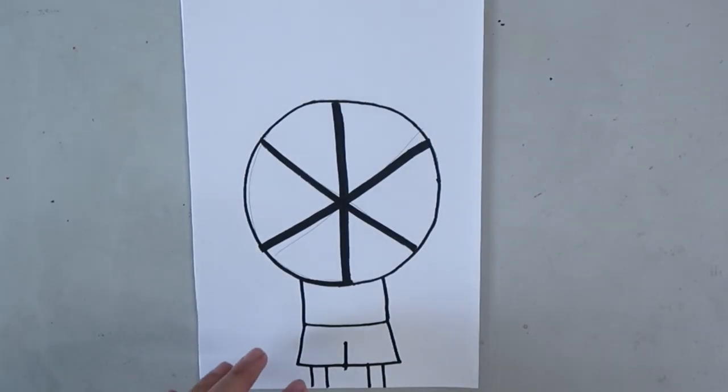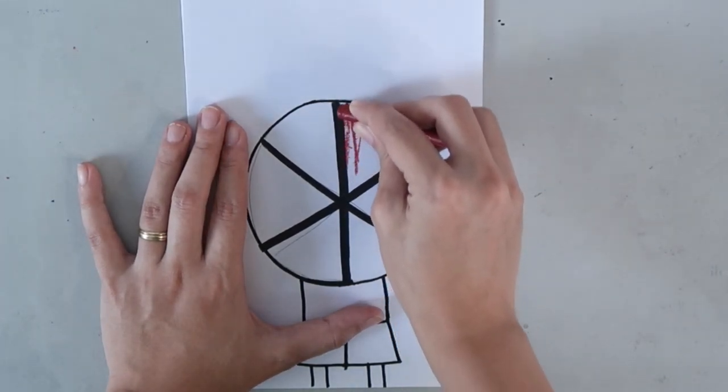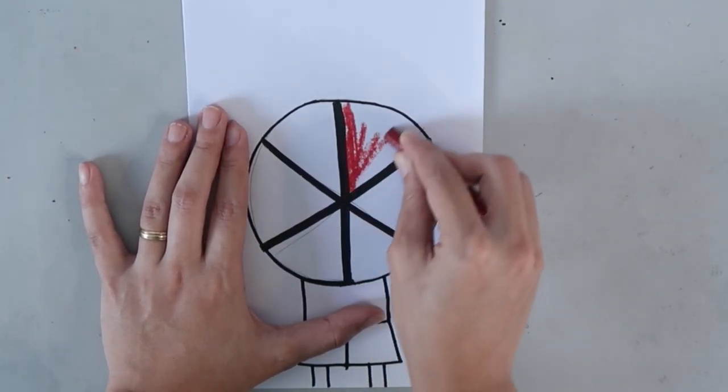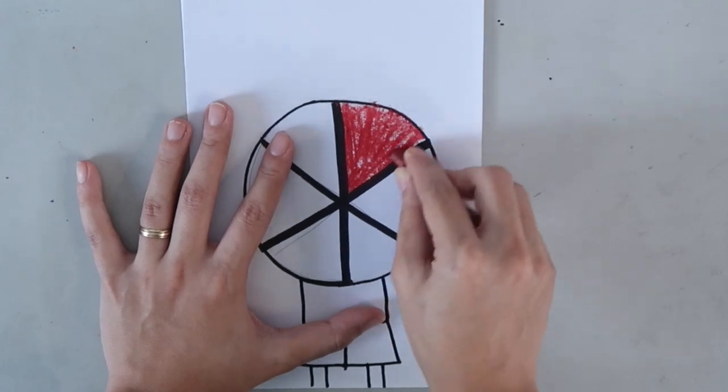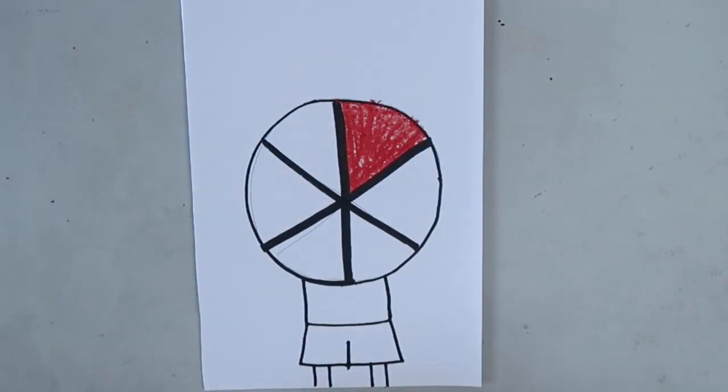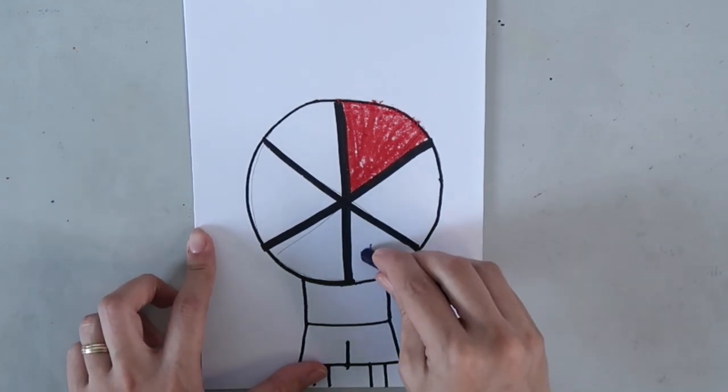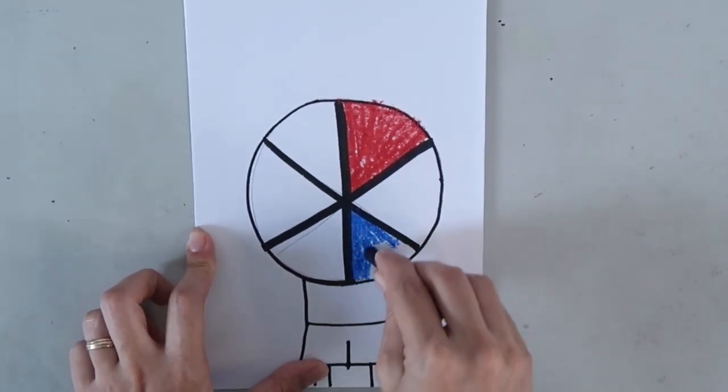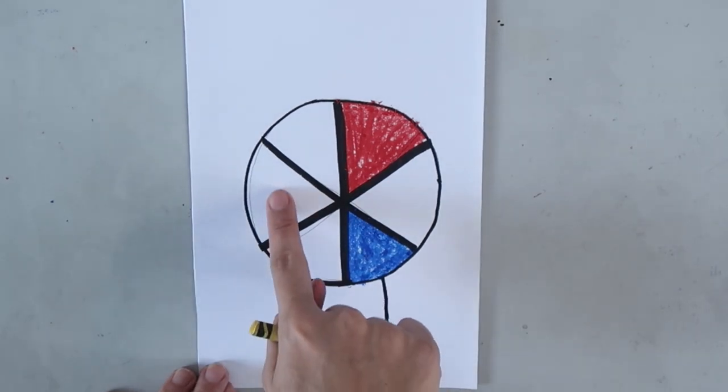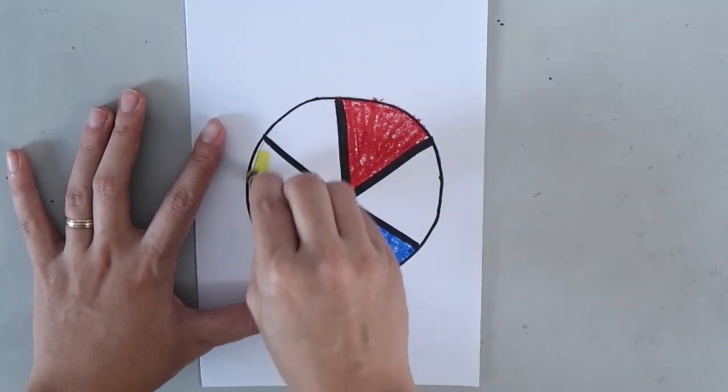A color wheel has three primary colors. So, let's begin with the color red. Now, you have to skip one space, and then for the next color, we're going to color it blue.